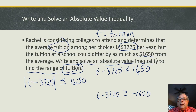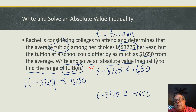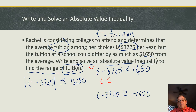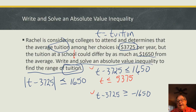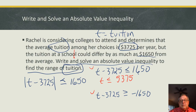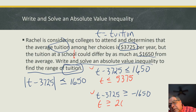In the first case, I'll add three thousand seven hundred and twenty-five to both sides. That establishes the upper end of my range: 3725 + 1650 = 5,375, so t ≤ 5,375. In the second case, I add 3,725 to negative 1,650: 3725 − 1650 = 2,075, so t ≥ 2,075.